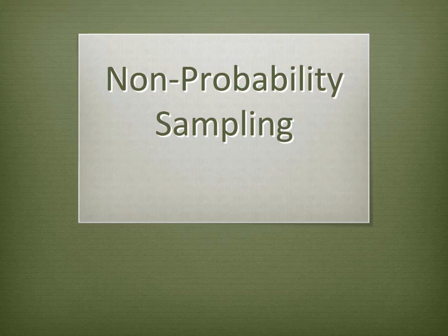Non-probability sampling methods. Non-probability sampling methods are what you need to use if you don't have a sampling frame and there's no way to know the odds of selection of each element in your sample.